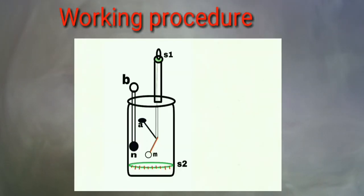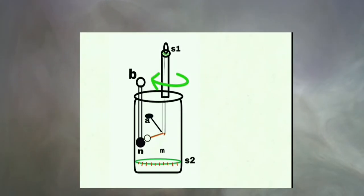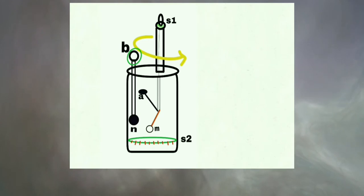Now let's move to the working procedure that Coulomb did. At first, the torsion head was moved clockwise direction to touch M to N and in this position S1 equal S2 equal 0 degree. Then, using torsion head, again detached the M from N.